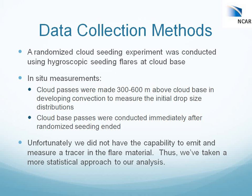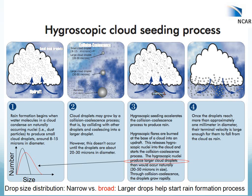Sometimes we had to fly a little bit higher than 300 meters above cloud base. We've constrained it to that range to try to prevent any natural broadening that could occur with measurements taken too much higher. These cloud-base passes were conducted immediately after randomized seeding ended, so whether or not the cloud was seeded, we always ascended to just above cloud base to take these initial droplet spectra measurements. Unfortunately, in the Queensland program, we did not have the capability to emit and measure a tracer in the flare material, so we're not able to look directly at plumes affected by seeding. Instead, we're taking a statistical approach to our analysis.